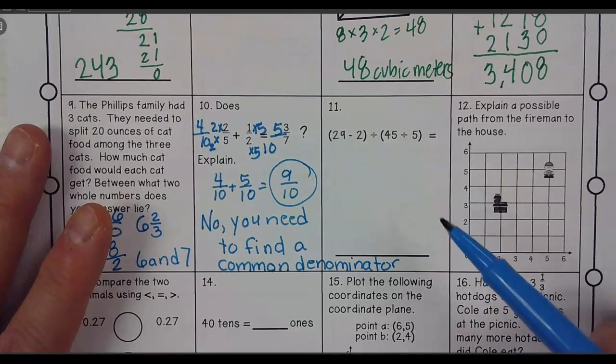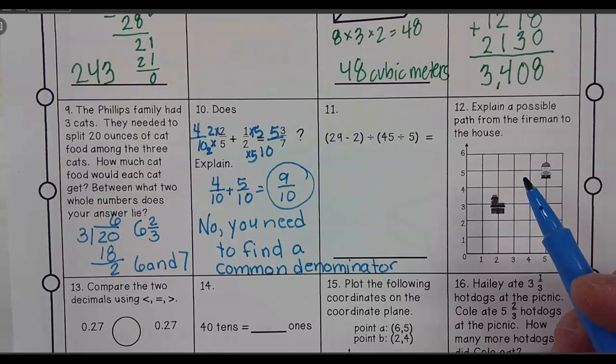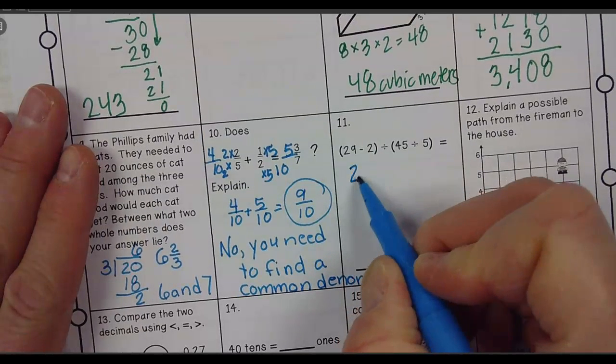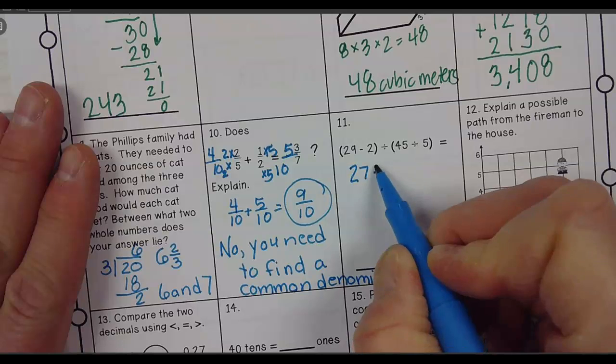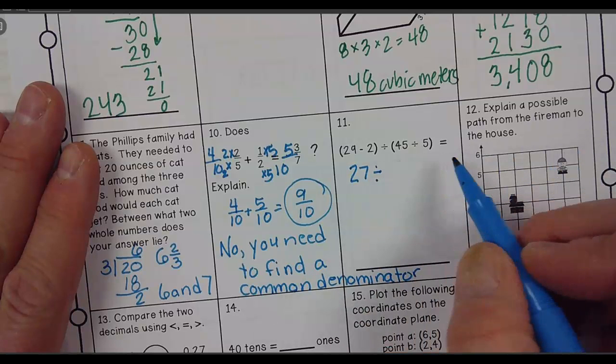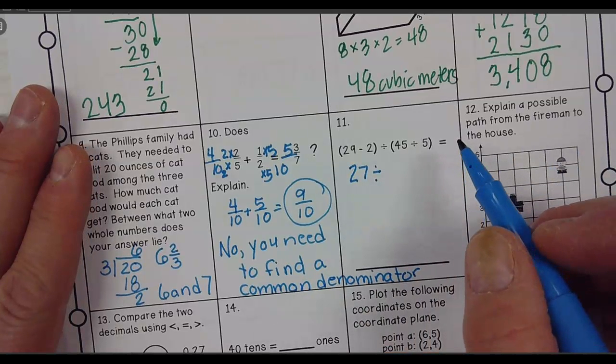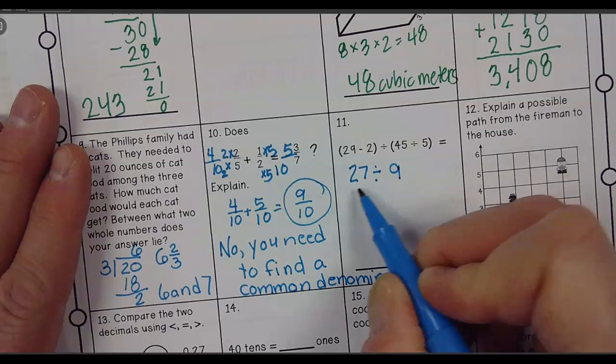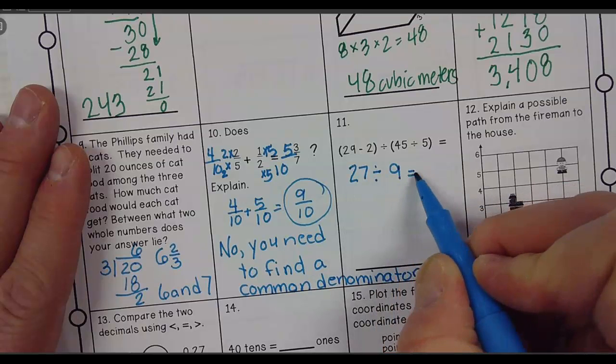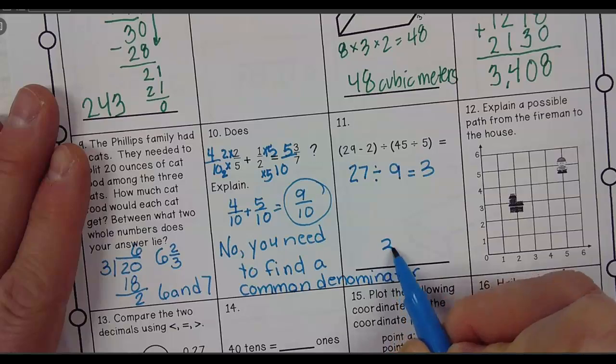So 29 minus 2 is 27. 29 minus 2 is 27. I'm going to put the division sign, and then 45 divided by 5 is? 9. And then you get 3. And then 27 divided by 9 is 3. The answer should be 3. You are right.